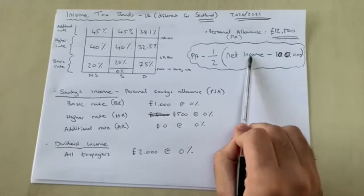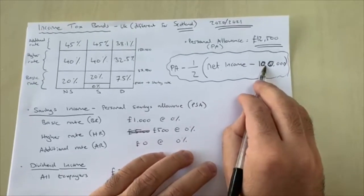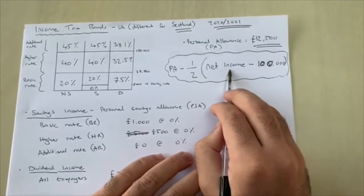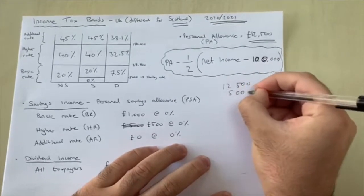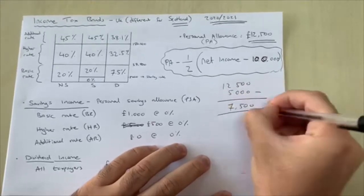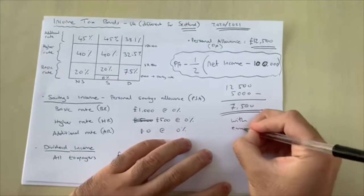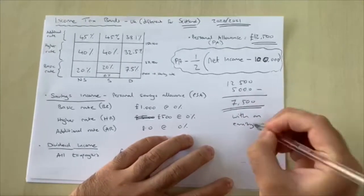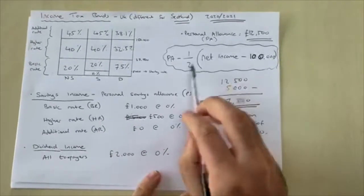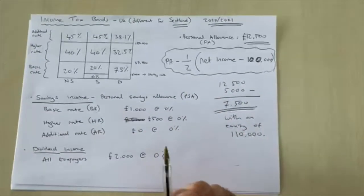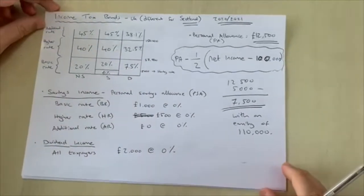However, if you earn £110,000: take away £100,000 is £10,000; half of £10,000 is £5,000; take away from your personal allowance of £12,500, minus £5,000, and you would have a personal allowance of £7,500. That's the simple formula. Obviously if you earn less than £100,000, you get the full allowance of £12,500, given you have no benefits from your company.